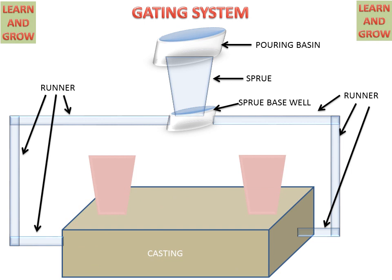On the casting, there are risers. Risers are used for two purposes: first, they show us that the cavity is full of molten metal, and secondly, they provide molten metal to the casting process so that shrinkage losses do not occur in the casting.